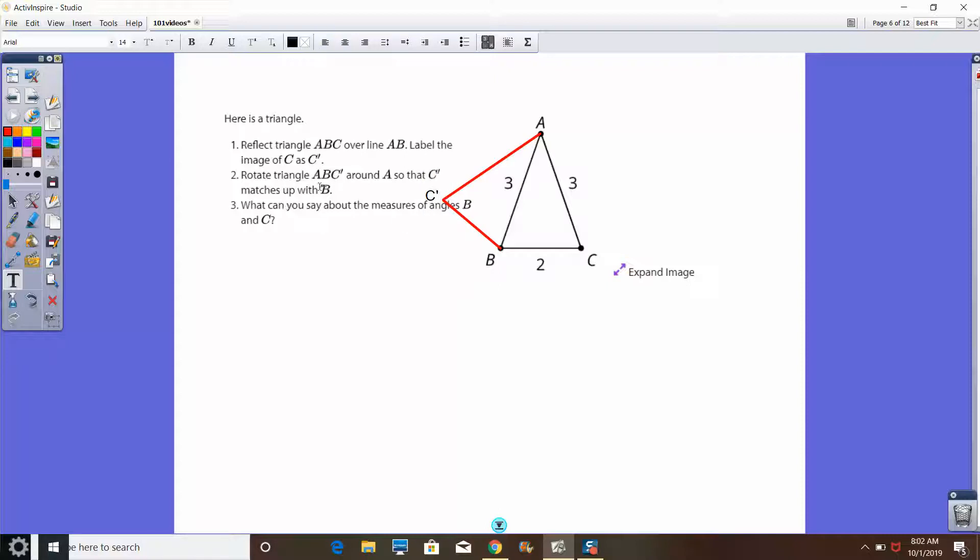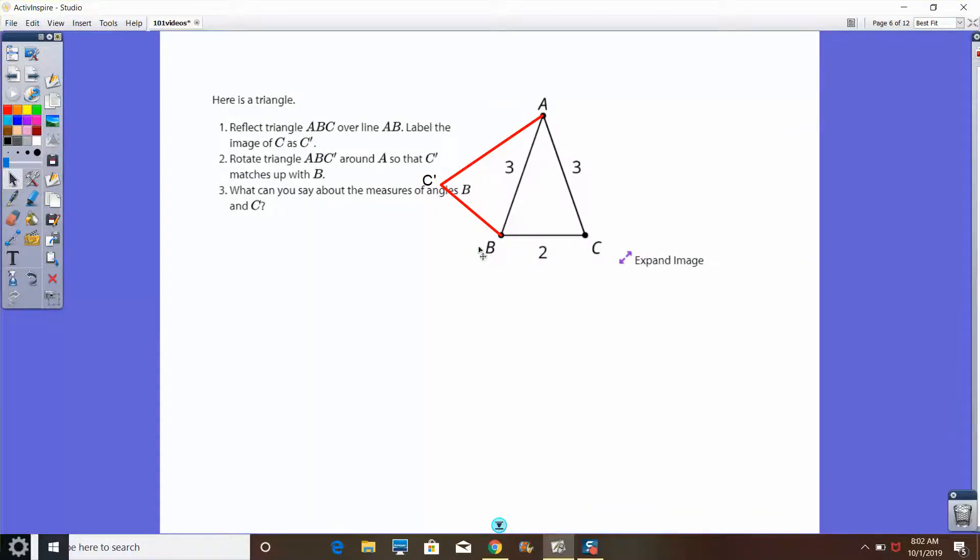Now, our next job is to rotate this triangle around A so C prime matches up with B. Picture this: if I take this new triangle and rotate it all the way around until C prime lines up with B, what do you think is going to happen? If your answer is this triangle is going to overlap this triangle completely, then good job. You have a good visual sense from this lesson already. This triangle will overlay this triangle completely.